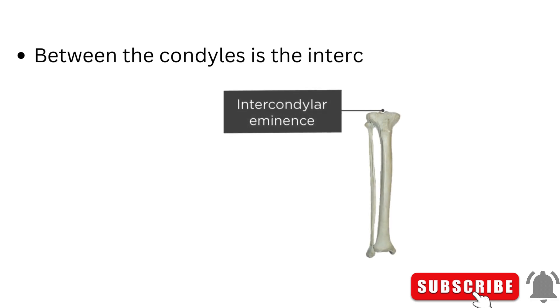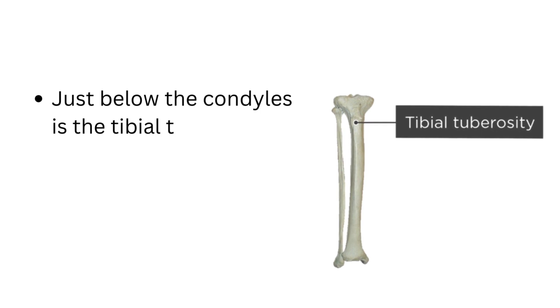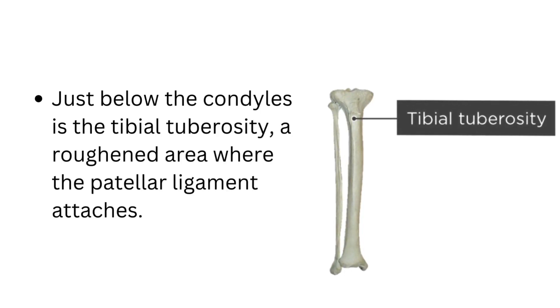Between the condyles is the intercondylar eminence, a bony ridge. Just below the condyles is the tibial tuberosity, a roughened area where the patellar ligament attaches.